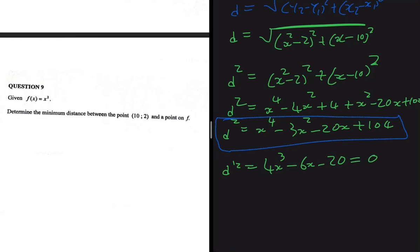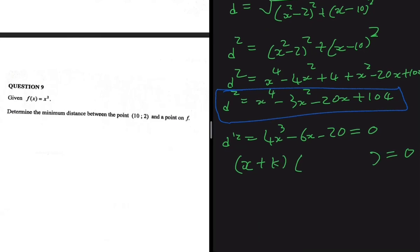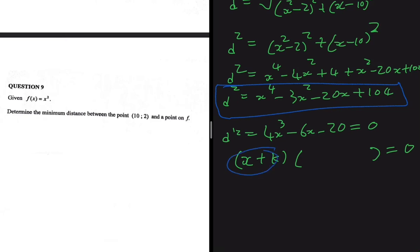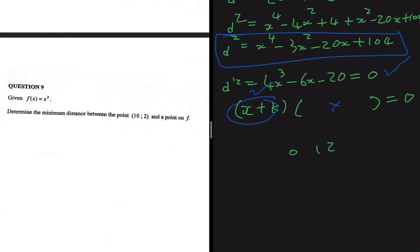Now we need to solve 4x³ - 6x - 20 = 0. We expect a factor of the form (x + k) multiplied by a quadratic equal to zero. The way to solve this is to start with trial and error — try a few values until you get zero. Once you find that factor, it becomes easy to handle the remaining quadratic. Let's try x = 0, 1, 2, -1, and -2.